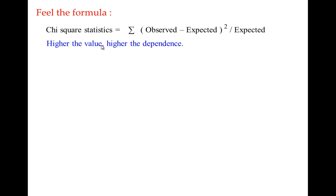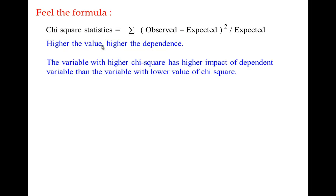Higher the chi-square value, higher the dependence. The variable with higher chi-square had more impact on the dependent variable than the variable with a lower chi-square value. But to determine when the chi-square statistic is significant, you need to understand the degree of freedom.